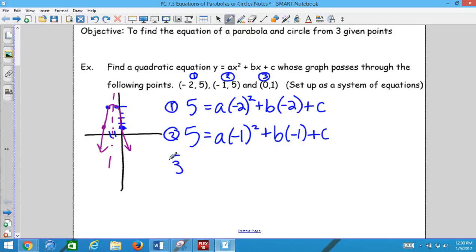I'm going to take ordered pair number two and plug it in. 5 = a(-1)² + b(-1) + c. And I'm going to take ordered pair number three and plug it in. 1 = a(0)² + b(0) + c. So we have three equations, and we have three variables, a, b, and c. That's what we need to find is what a, b, and c are. a, b, and c are going to be the same for all three equations.